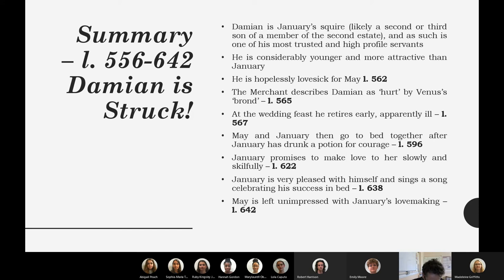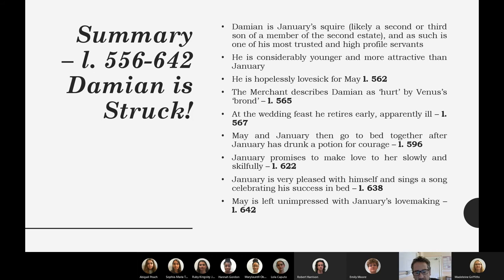On page 53, we begin with the idea of Damien being struck. His name is symbolic of demon, carrying on the allusion to the Garden of Eden story. He is lovesick for May — woeful. An audience of the Merchant's Tale would recognise in Damien the courtly lover: the lovesick Romeo who has an unrequited love for someone who's married and who he can't ever have. Damien is seen as attractive, the opposite of January. He's hurt by Venus's brond — hurt by love.